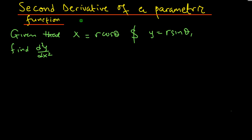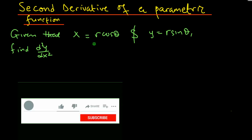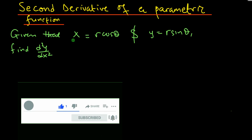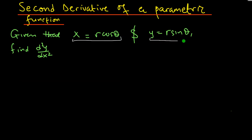Hi, in this video I'm going to find the second derivative of a parametric function. This can be sometimes tricky but I'm going to show you how to do it the easy way. We have a parametric equation x equals r cosine of theta and y equals r sine of theta, and we want to find the second derivative of y with respect to x. The second derivative is the derivative of the first derivative, so let's first get the first derivative.